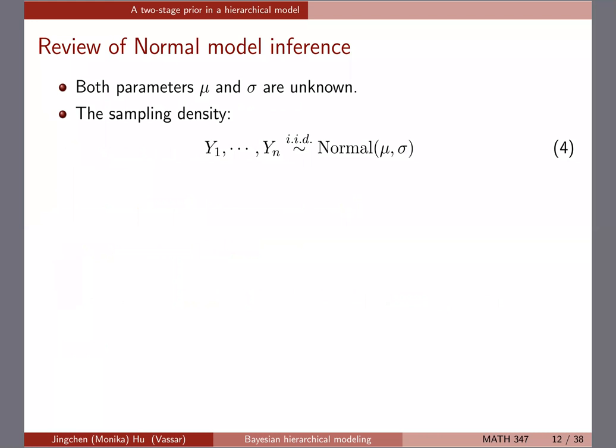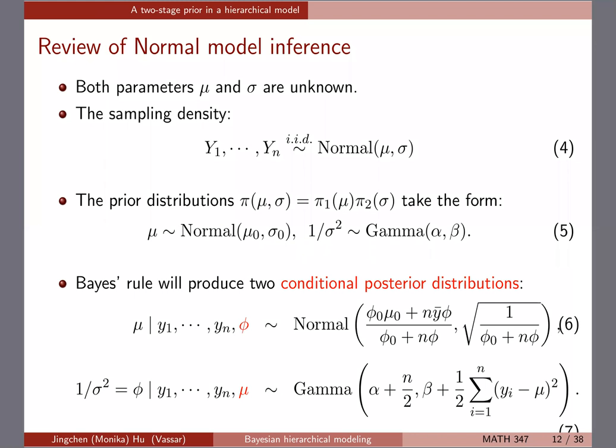Quick review — this is still using the Y subscript label notation from before, assuming that mu and sigma are both unknown. We put independent priors for mu and sigma: for mu it's a normal prior with mu-zero and sigma-zero; for sigma, one over sigma, the precision, is a gamma distribution with alpha and beta.